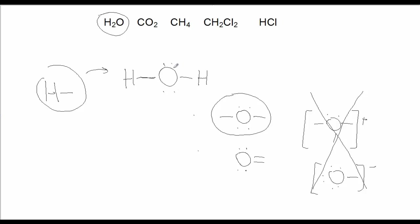We have the lone pairs on the oxygen. As a reminder, oxygen brings six electrons to the sharing party and picks up its seventh and eighth electron from hydrogen when it shares its electrons. Hydrogen brings one electron to the sharing party and picks up its second electron when it shares with oxygen.